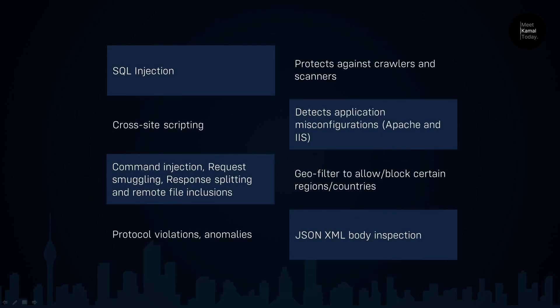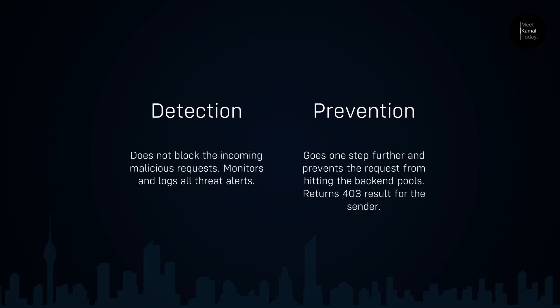Application gateway WAF can protect your application from SQL injection attacks, cross-site scripting attacks, common protocol violations and anomalies, protection against crawlers and scanners, and it detects web application misconfigurations. It can also do JSON and XML body inspections. You can go further and write your own policies, including geo filters and IP filters.